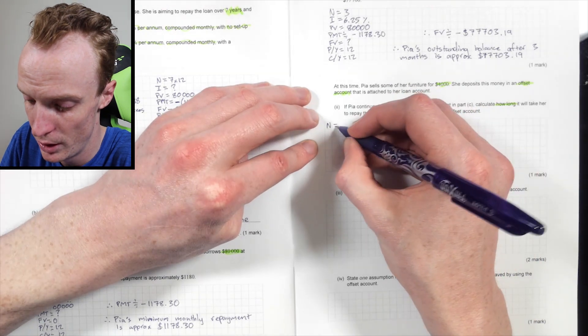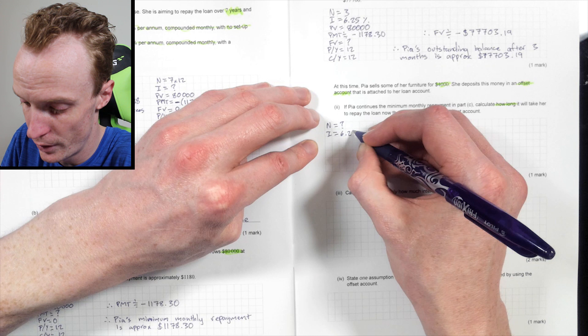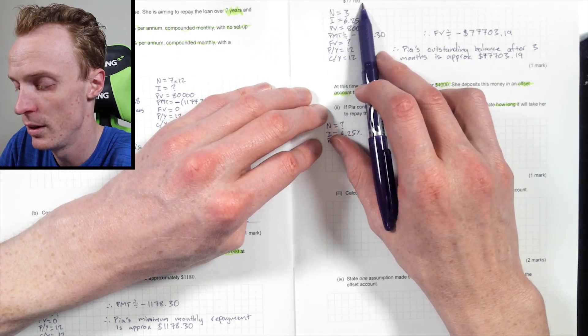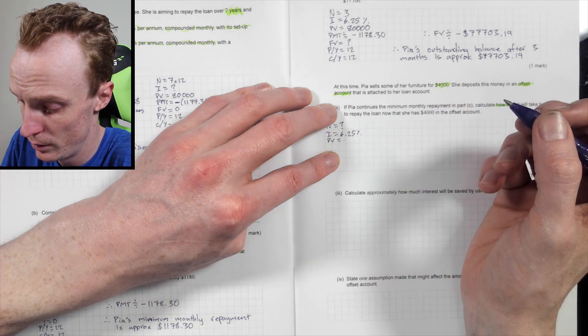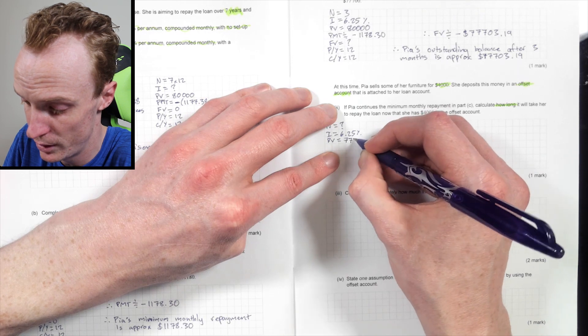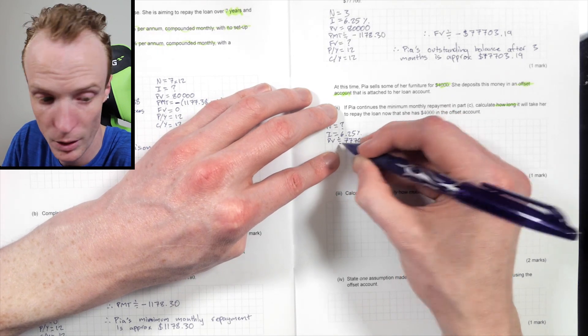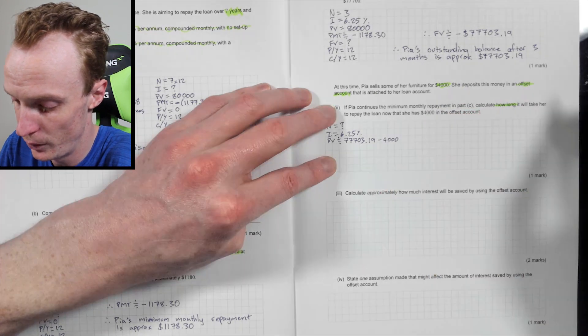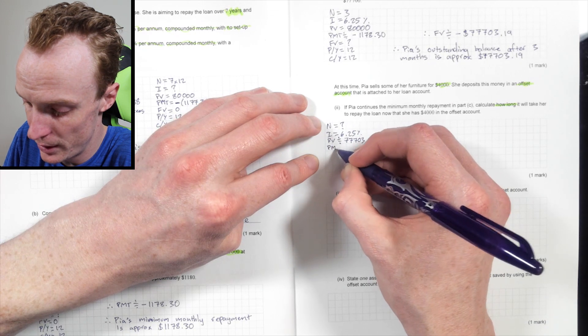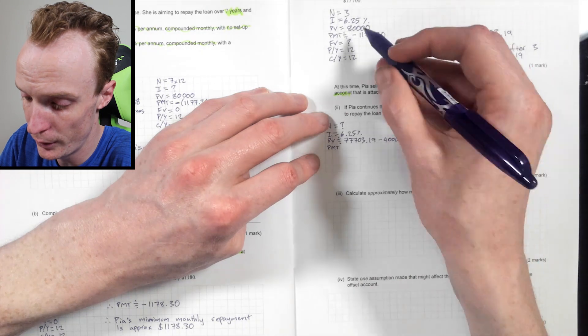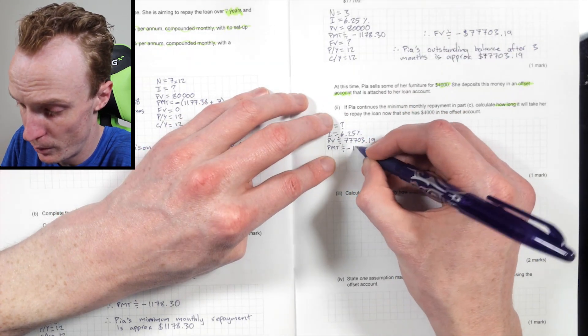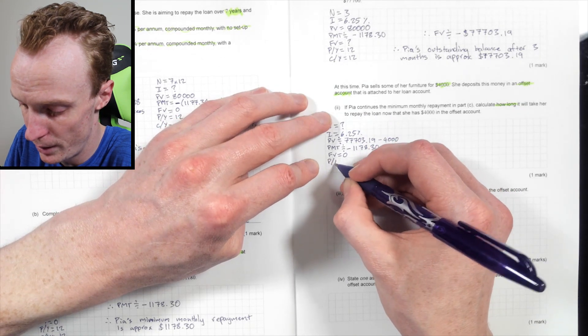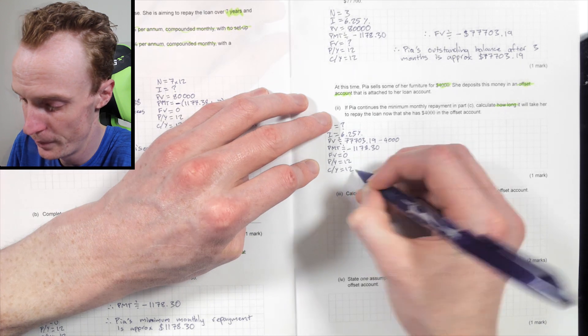We'll take the, repay the loan now that there's $4,000 in the offset account. So first of all, I need to do an end calculation. When my interest rate is 6.25%, my present value is, and once again, if you didn't get this value close to here, just use the one that's here. So it's present value. It's how much money I still will have a loan. So that'll be 77,703.19. I'm going to indicate that as an approximate. But you're also reducing it by 4,000. So I've got a minus the 4,000 off as well. My PMT, I'm assuming that we're maintaining the same amount. I'm assuming that's what it says. Continues the minimum through payment. Excellent. So that'll be approximate negative 1,178.30. My future value, I'm repaying it fully. So that'll be zero. PY is 12. CY is 12.